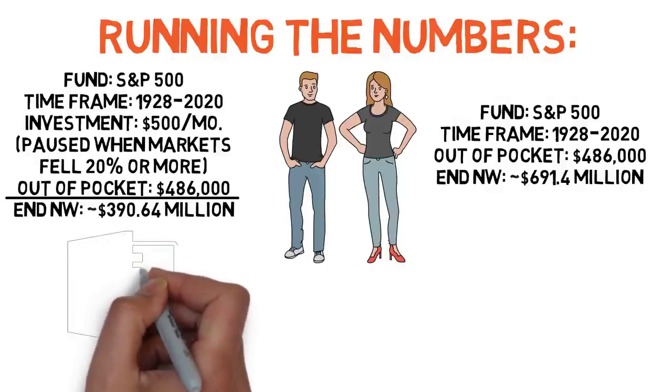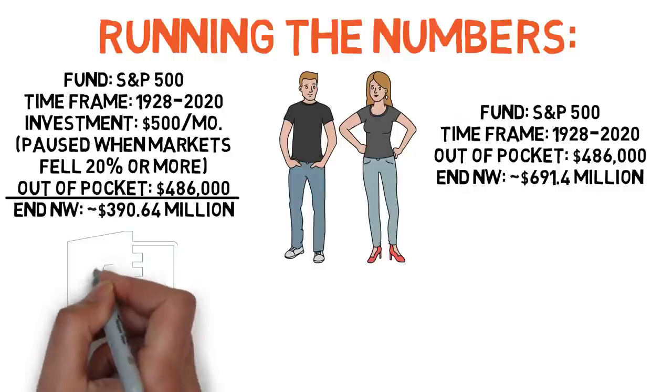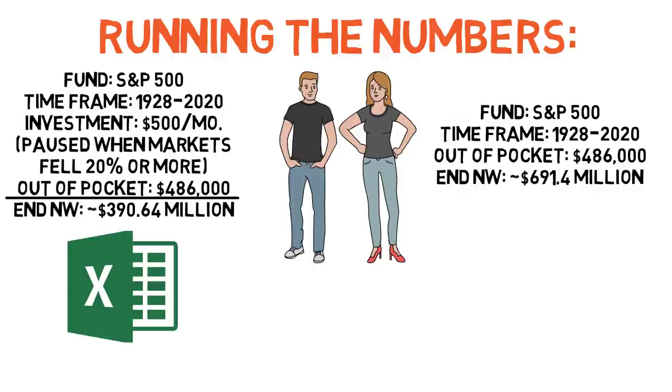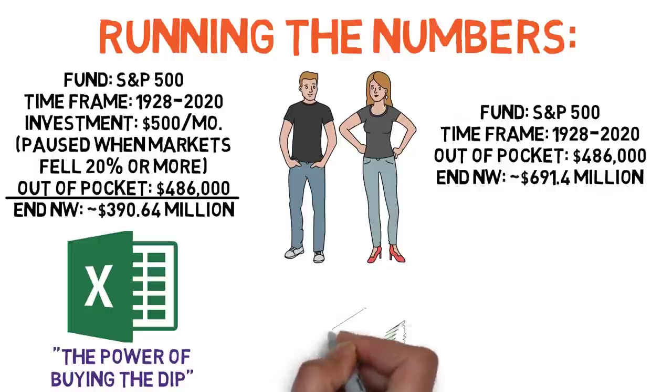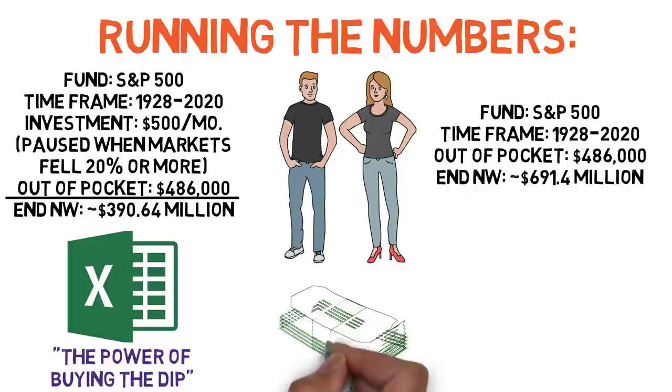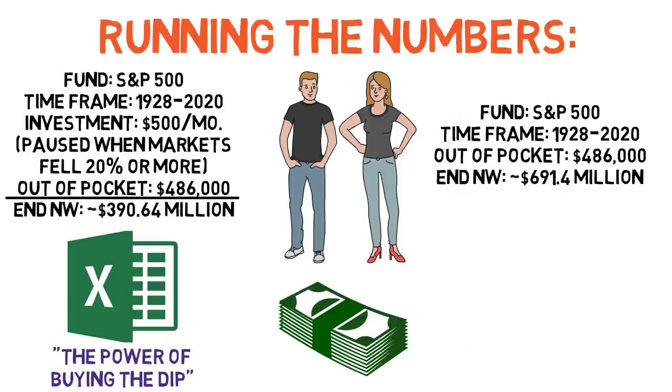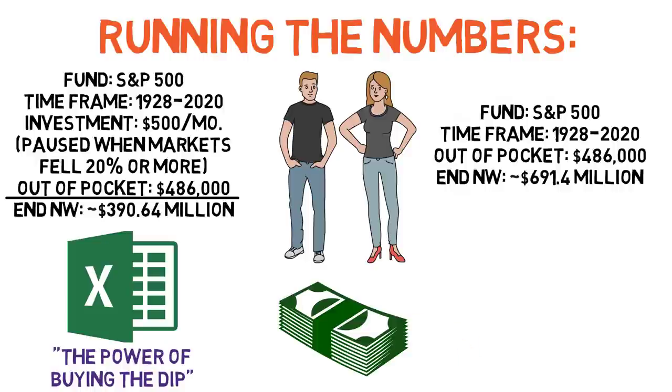As always, if you want to explore different scenarios with your own numbers, I've got a spreadsheet up on my Patreon page called The Power of Buying the Dip that allows you to select different portfolios and time periods, put in how much money you've got and how much you're going to invest, both during normal years and during dips, which you can also set custom thresholds for if you don't want to use the 20% like I just did. But for the purposes of today's video, the point is, it can make quite a difference, especially with those more volatile and high-reward investments like stocks.